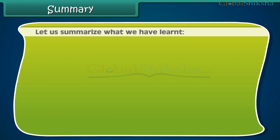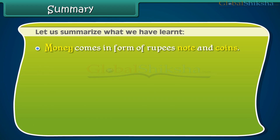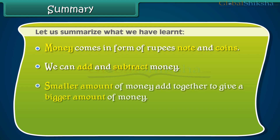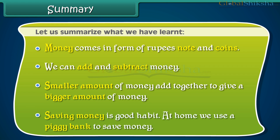Let us summarize what we have learnt. Money comes in the form of rupee notes and coins. We can add and subtract money. Smaller amounts of money add together to give a bigger amount of money. Saving money is a good habit. At home, we use a piggy bank to save money.